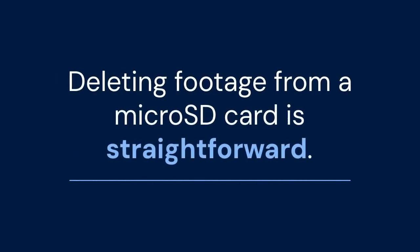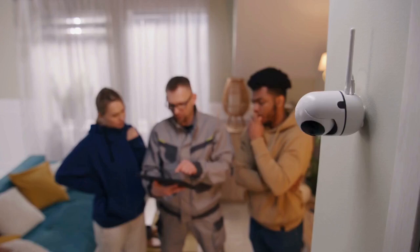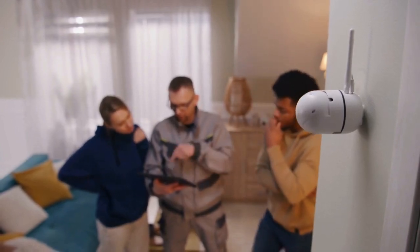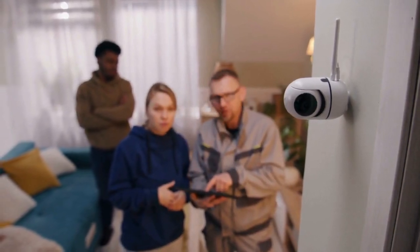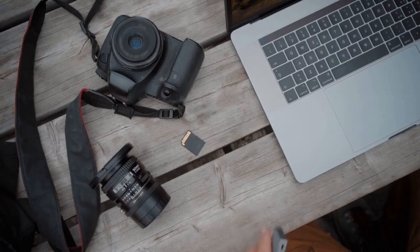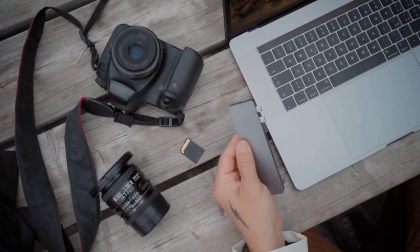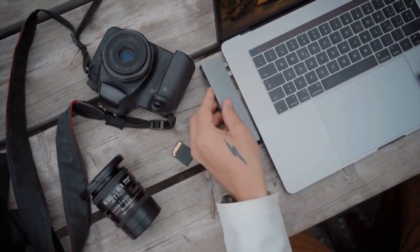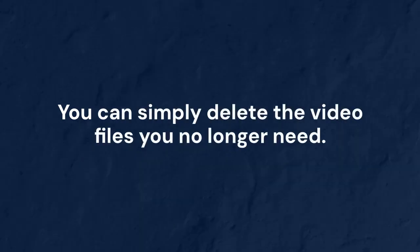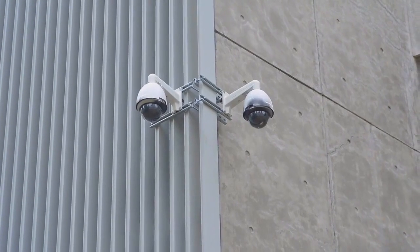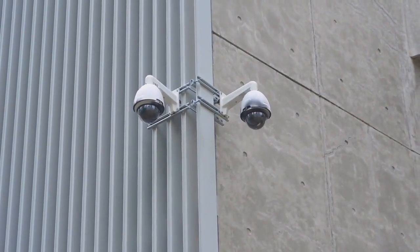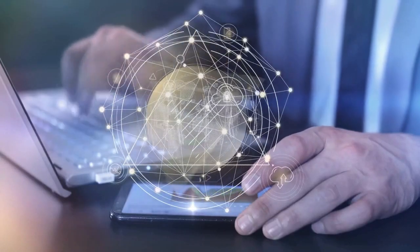Deleting footage from a microSD card is straightforward. You need to physically access the camera and remove the card. Then, insert the microSD card into your computer using an adapter. Open the file explorer and locate the microSD card. The video files will be in a folder — you can simply delete the files you no longer need. Alternatively, you can format the entire microSD card to erase everything at once. Remember that formatting will erase all data, so be sure you've backed up anything you want to keep.